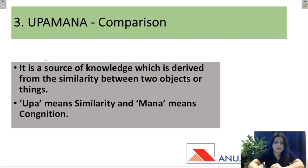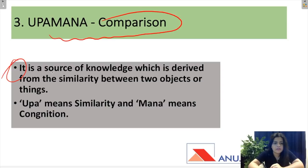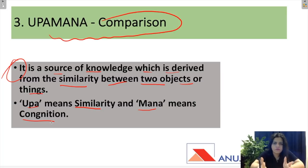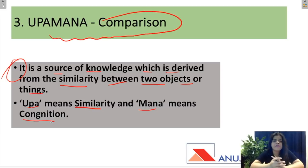The third source is Upamana, which means Comparison. It is a source of knowledge derived from the similarity between two objects or things. Upamana means similarity; Mana means cognition, i.e., knowledge. When we see the similarities between two objects to gain knowledge or prove a point, that process is called Upamana. So in Upamana, we derive knowledge by comparing two objects or things.